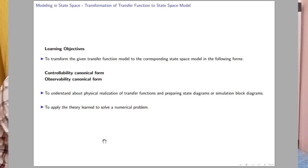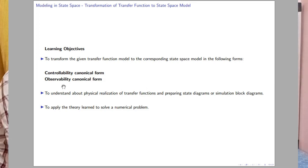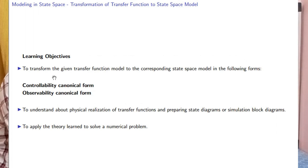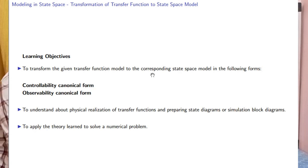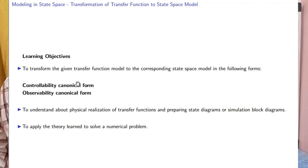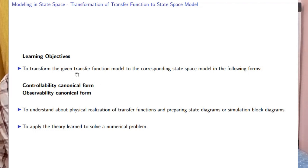Since P can be any invertible non-singular matrix, theoretically we can have an infinite number of state space models for a single system, so the state space model is not unique. Some choices of P result in fixed structures called canonical forms, such as controllability canonical form, observability canonical form, diagonal canonical form, and Jordan canonical form.